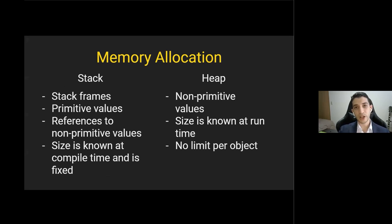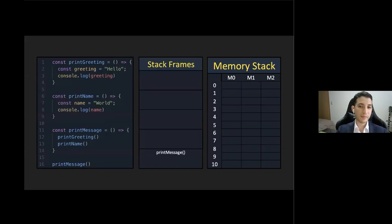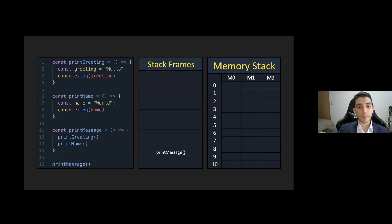The memory heap, on the other hand, is the portion of memory that is not fixed in size. It is used to store complex objects such as objects and arrays, as well as any variable whose size or type we don't know at the time of initialization. Let's look at a code snippet to see how memory allocation works in the stack. We have three simple functions — print greeting and print name — they each create a string variable, assign it a value, and console log it.